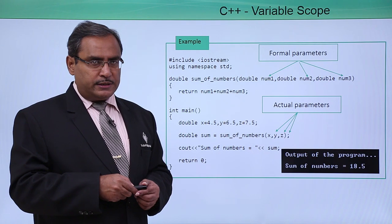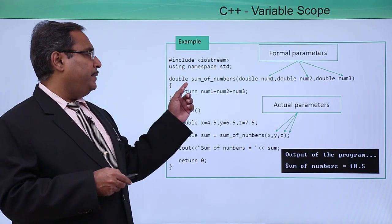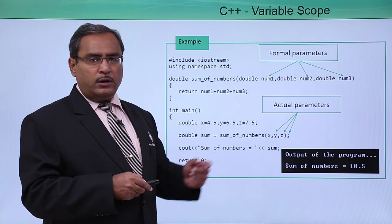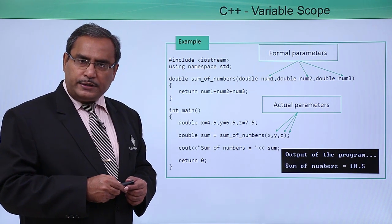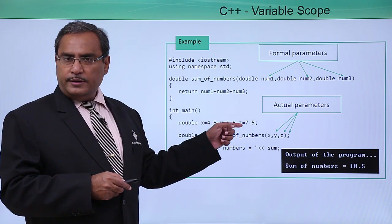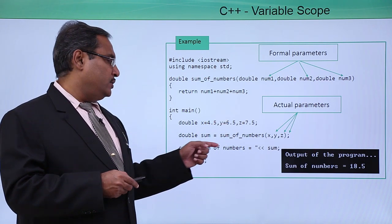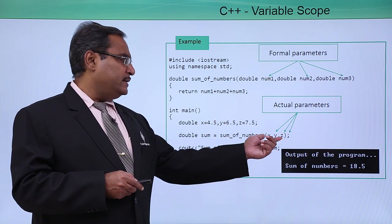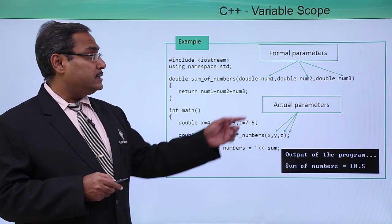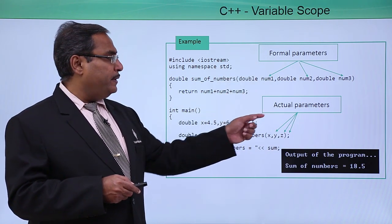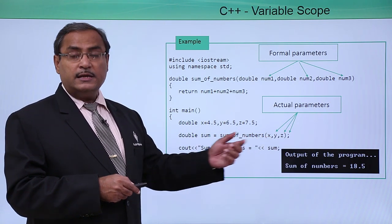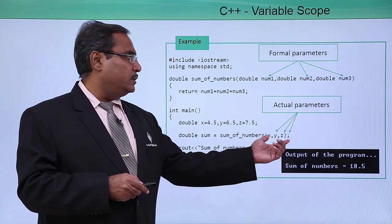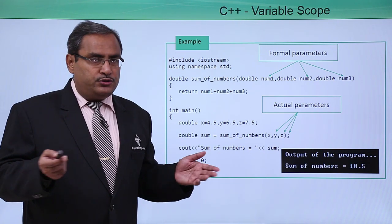Now let us go for formal parameters and actual parameters. Here we have a function 'sum of numbers' passing 3 numbers of type double, and num1, num2, num3 will be known as formal parameters. We have 3 double variables x, y, and z that are initialized. When we pass x, y, z to the 'sum of numbers' function, then x, y, z will be known as actual parameters. In this way the variables can be defined in the parameter scope — those are the formal and actual parameters, and sometimes we also call them arguments.